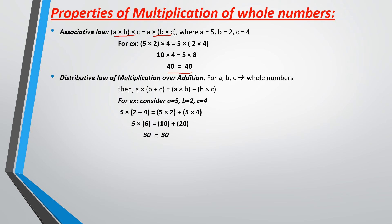Distributive law of multiplication over addition: multiplying an entire sum by a number gives the same result as multiplying each addend separately and then adding their products together. We have considered A as 5, B as 2 and C as 4. On the left-hand side of the equation, substituting gives an answer of 30. On the right-hand side, also substituting and adding the products still gives 30. So the left-hand side equals the right-hand side — hence proved.